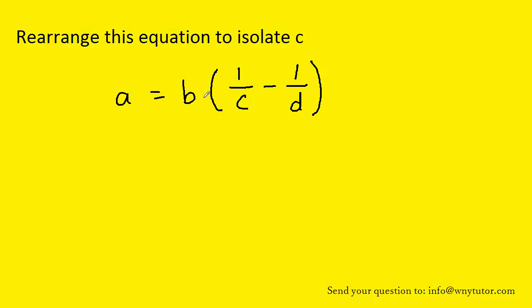So in order to rearrange the equation to isolate C, the first thing we would want to notice is that B is being multiplied by the entire quantity that's in parentheses. And so what we could do is the inverse of multiplication and divide both sides by B to get this problem started.